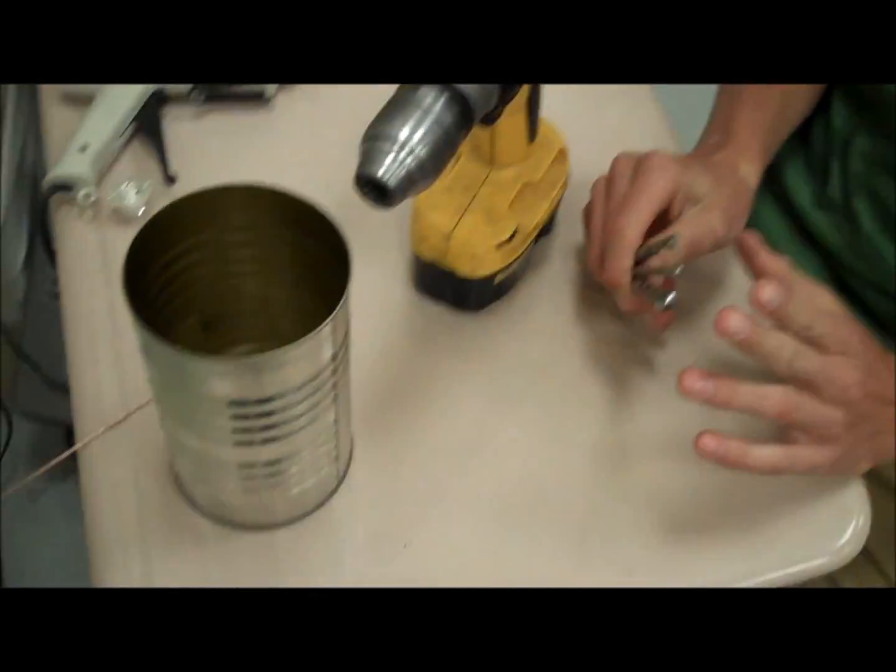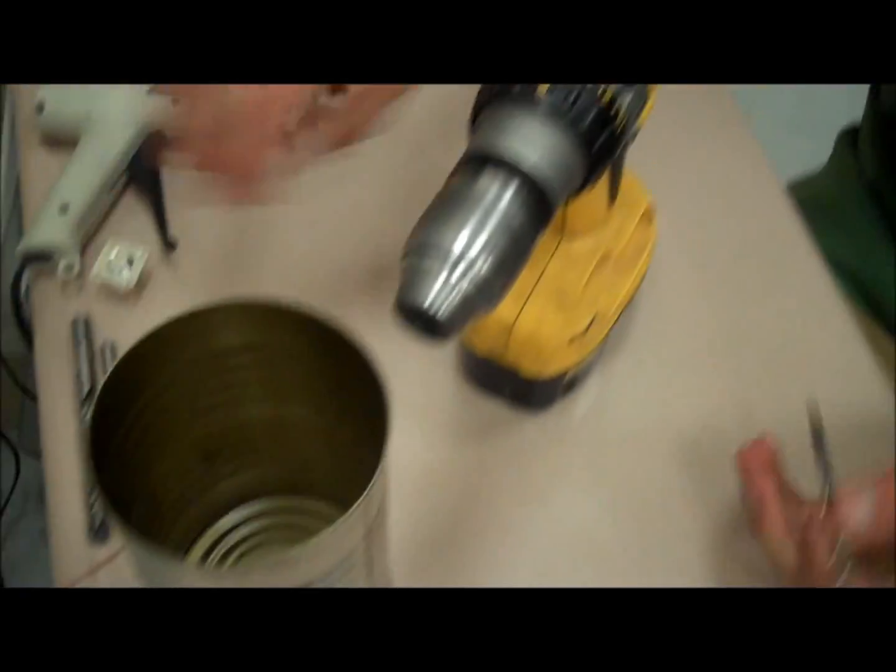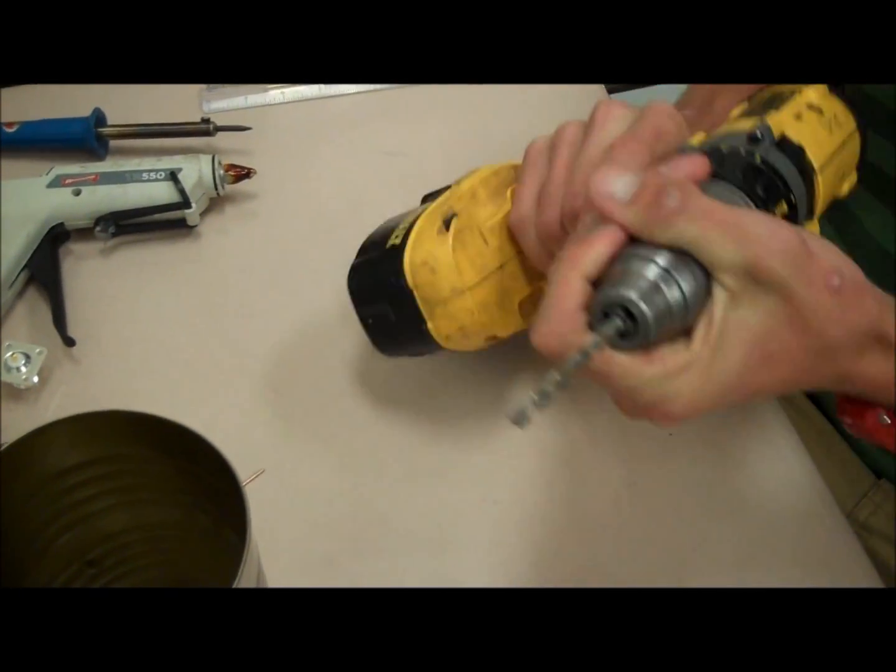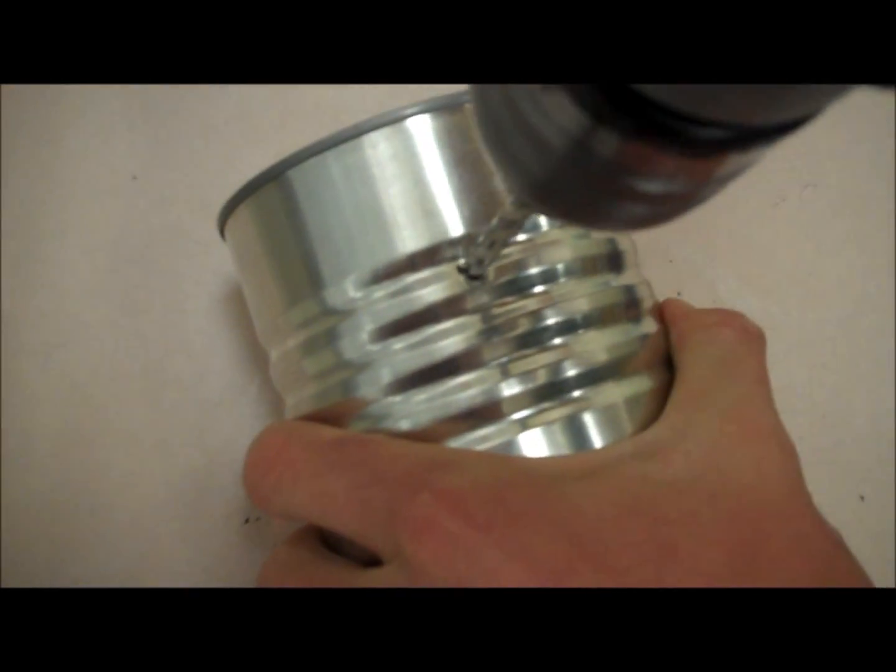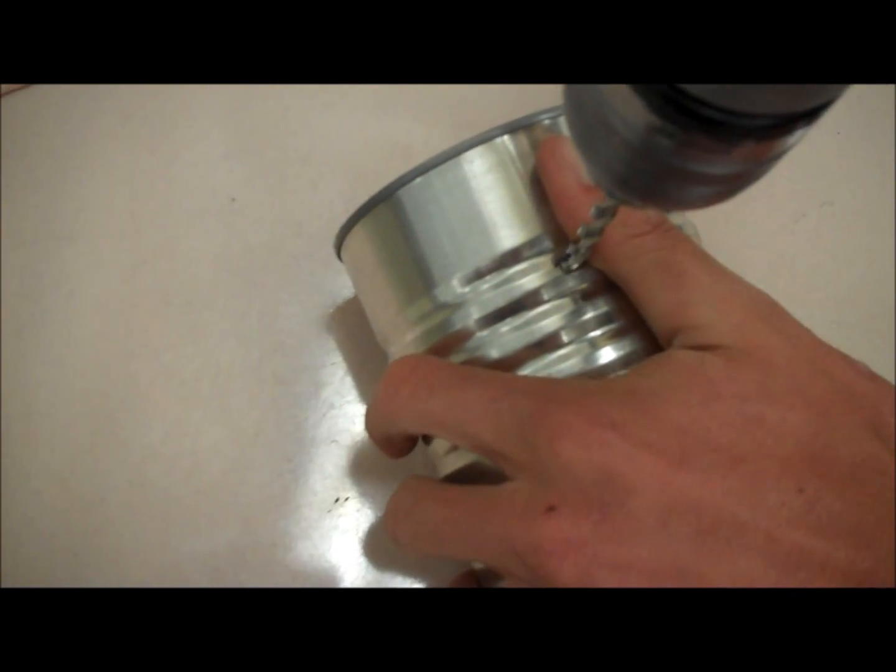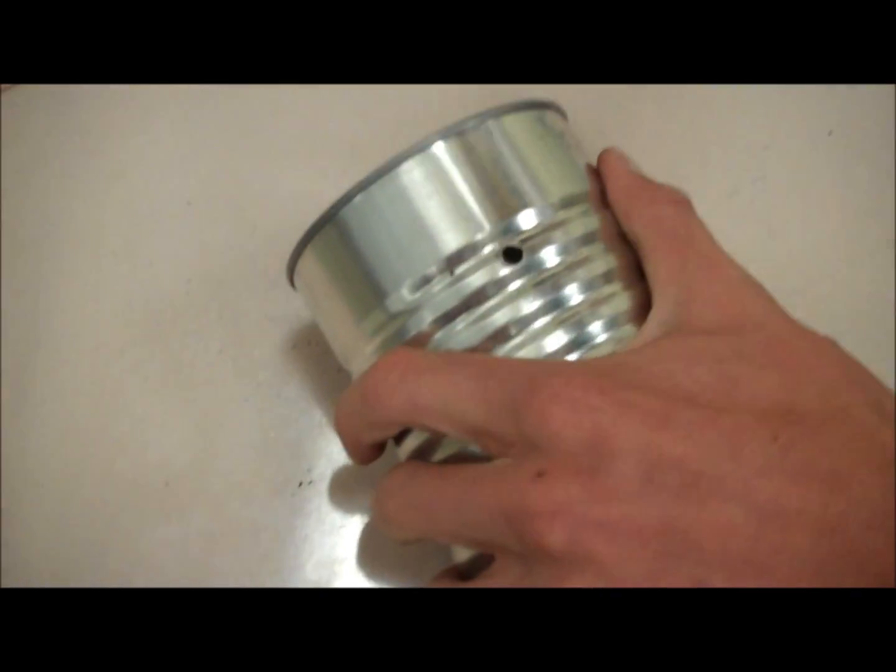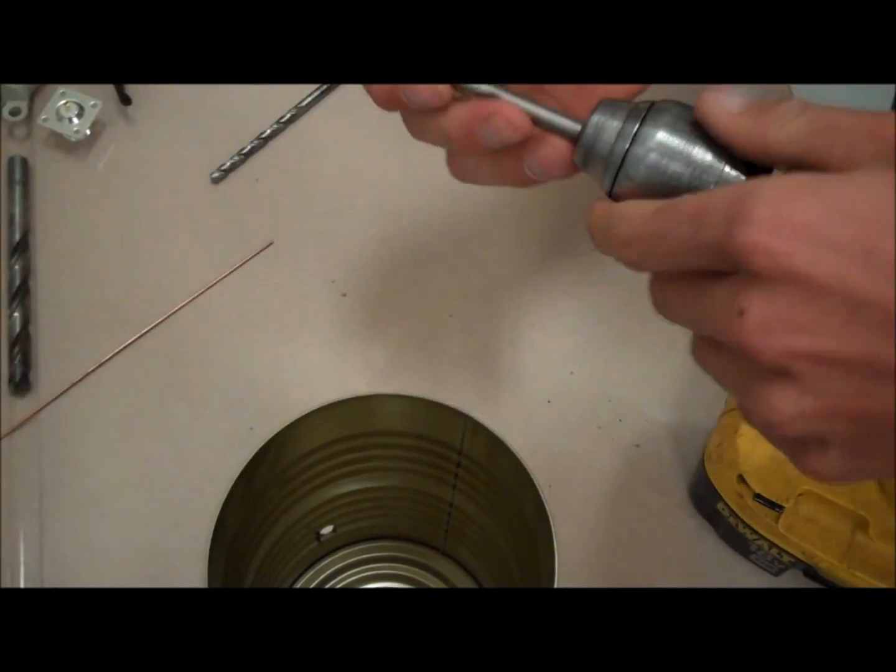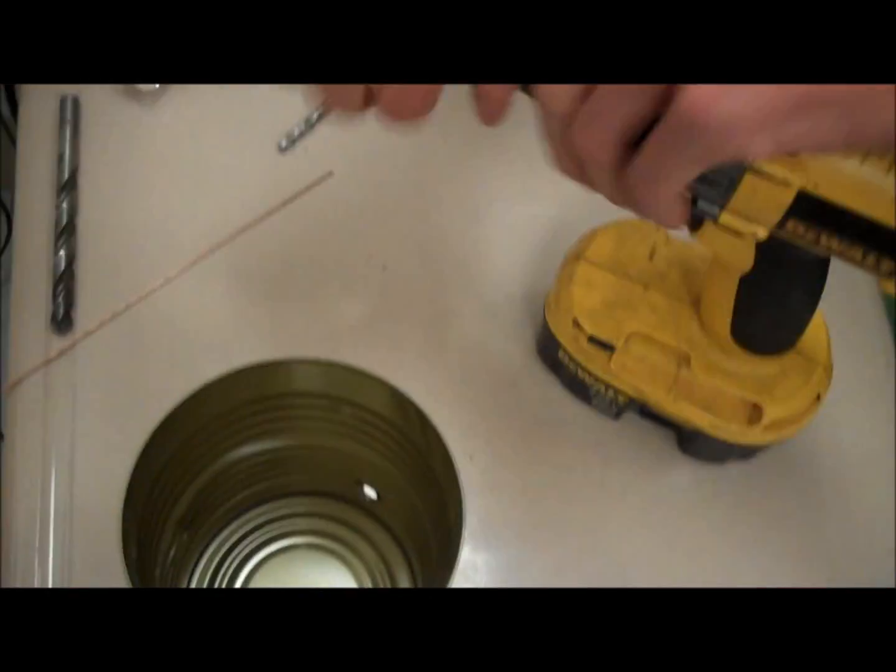Next, we're going to take our three drill bits and progressively drill our hole until it fits the N-type female connector. We'll start with the small one. We're just going to put it in and drill. Now we've got the pilot hole and then we'll switch to a larger drill bit and move our way up.